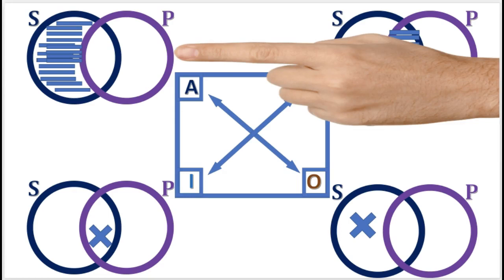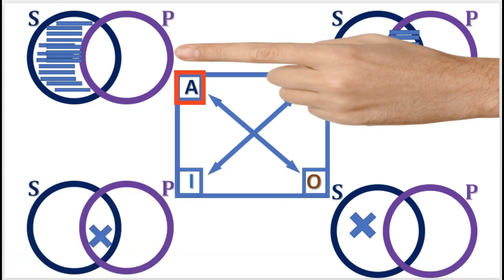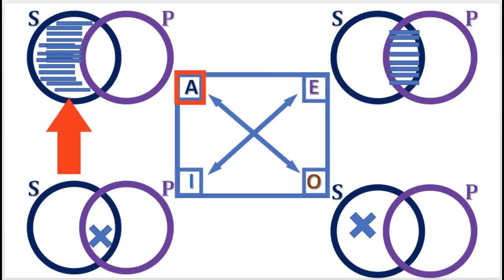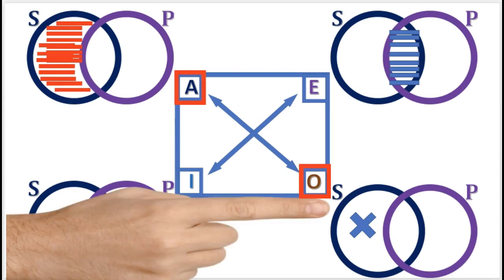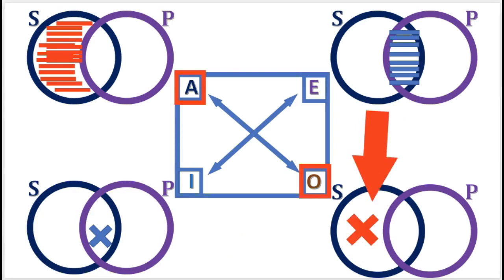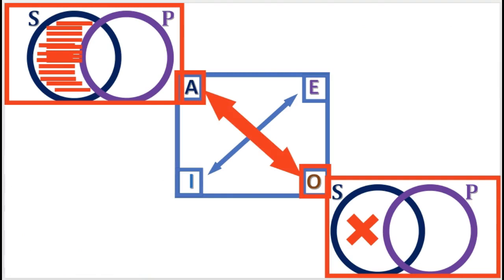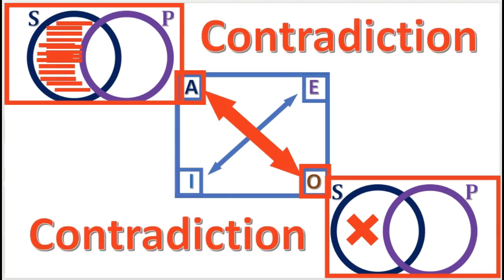Now look at the Venn diagram for the A and O propositions. The diagram for the A proposition asserts that the left-hand part of the S circle is empty. But on the other hand, the diagram for the O proposition asserts that the left-hand part of the S circle is not empty. So these two diagrams are exactly opposite of each other, which means that the A and O propositions contradict each other.